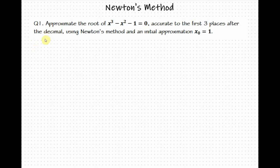Here is the example. Approximate the root of x cubed minus x squared minus 1 equal to 0, accurate to the first three places after the decimal, using Newton's method and an initial approximation of x sub 0 equal to 1.